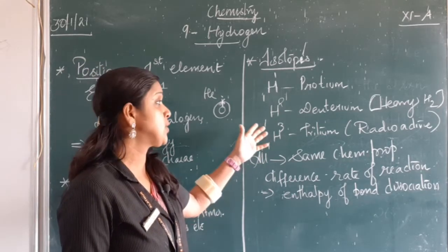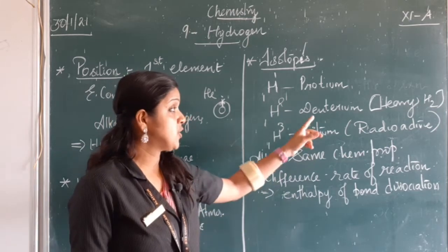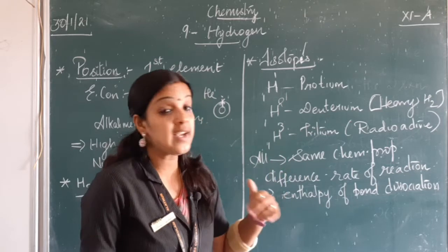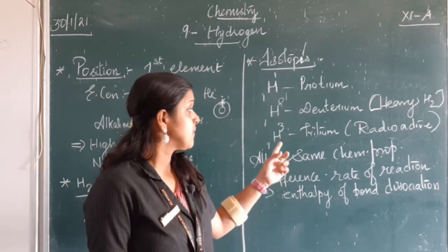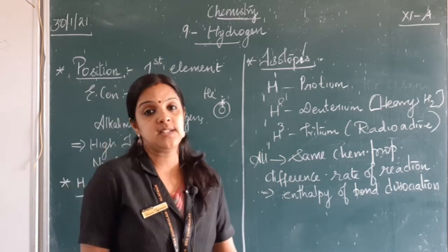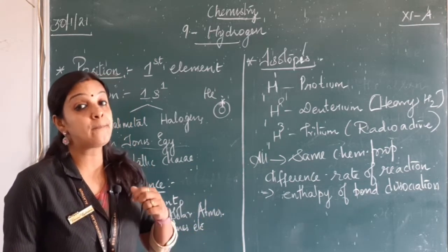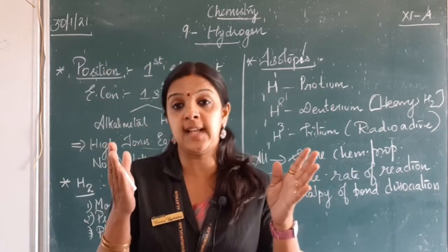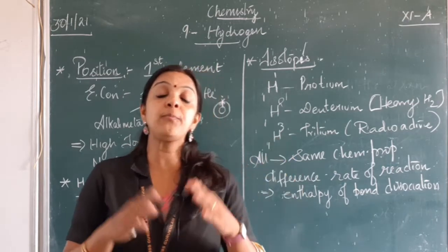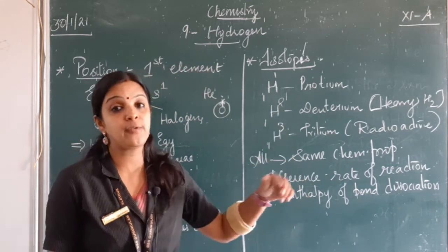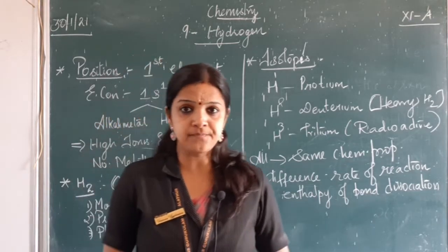The three isotopes are: H-1-1 protium, H-1-2 deuterium, and H-1-3 tritium. Their mass number actually changes. Deuterium is also called heavy hydrogen, or heavy water (D2O), which is used in nuclear reactors as a coolant. Tritium is the most important radioactive element. All three have the same chemical properties because they have the same configuration, but they differ in bond dissociation enthalpy — the energy required to break or split the bond. That is why the rate of reaction also differs from one isotope to another.